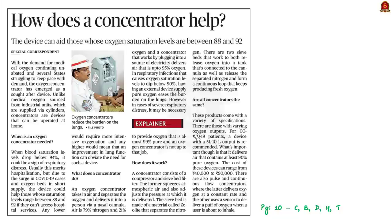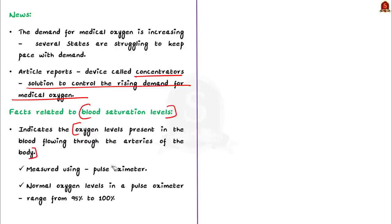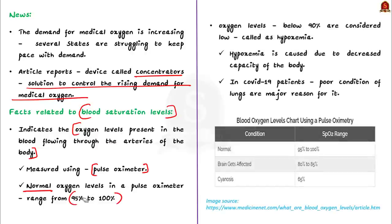The second wave of COVID-19 is causing heavy damage, with demand for medical oxygen rising sharply as several states struggle to keep pace. This article discusses oxygen concentrators as a solution. Blood oxygen levels indicate oxygen present in blood through the arteries, measured using a pulse oximeter; normal levels range from 95–100%. Due to COVID-19, levels can drop below 90%, a condition called hypoxemia, caused by decreased lung capacity.